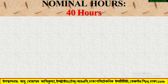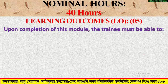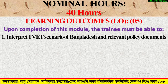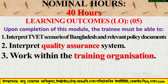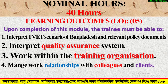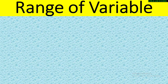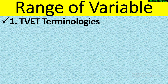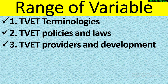The nominal duration is 40 hours. Learning outcomes: upon completion of this module, the trainee must be able to interpret TVET scenario of Bangladesh and relevant policy documents, interpret quality assurance systems, work within the training organization, and manage work relationships with colleagues and clients, and assist learners to develop competency as per needs and interest.